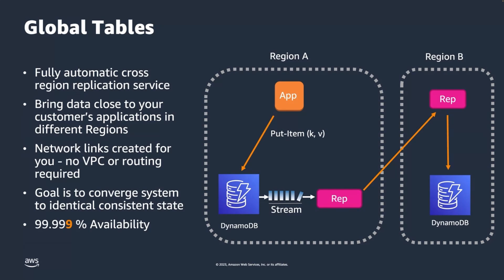As you're writing into this DynamoDB table and replication is happening, the system will converge to a consistent state eventually. At any particular moment in time, there might be a transaction from region A that hasn't yet replicated to region B — that's just the nature of the speed of light. But given enough time, those two tables would reach a consistent state. When we go to global tables with two or more regions participating, our availability SLA becomes five nines, versus four nines for a single region.